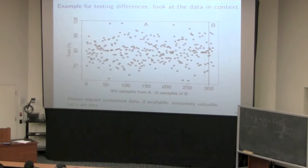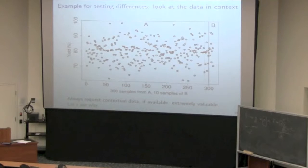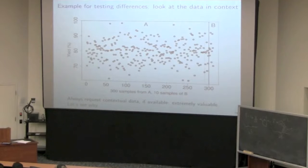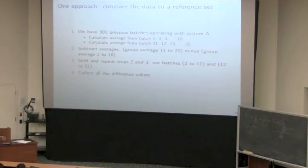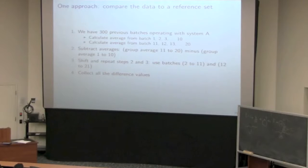The key point is: first, you always ask for contextual data. You've got more data than just those 10 data points — use it to your advantage. You have to make a decision. If you're a good MBA student, you call a meeting and get everyone else in the room to decide so you don't take the blame. But really, here's a super interesting way of doing it that requires no statistics and simply uses the historical data.